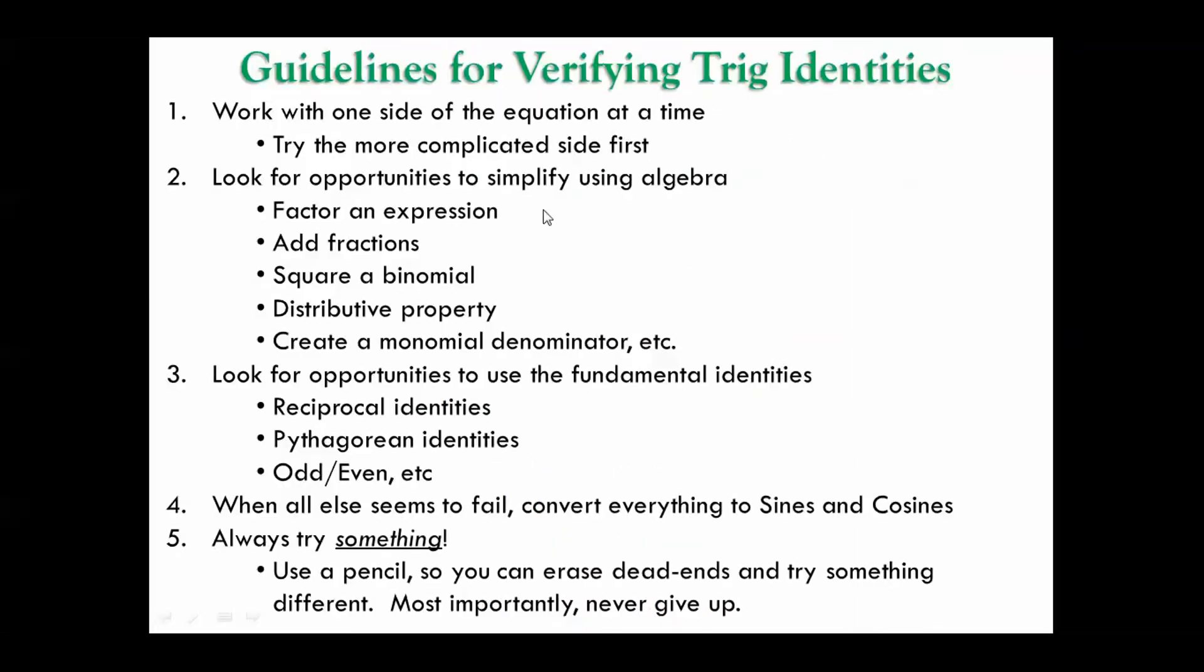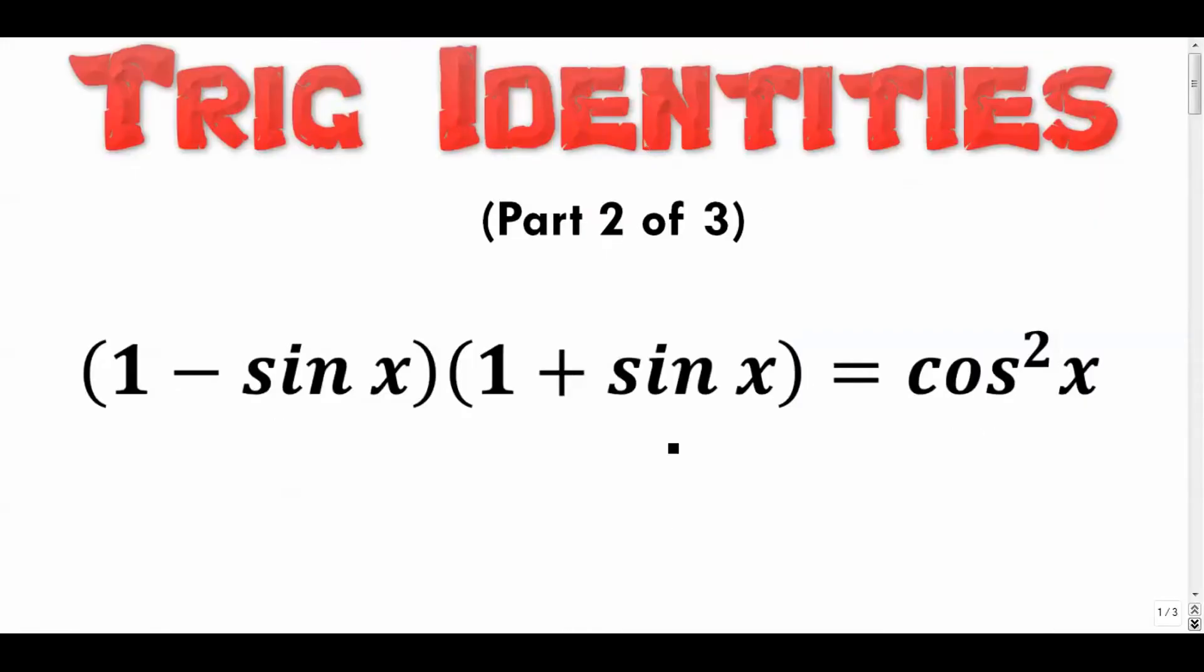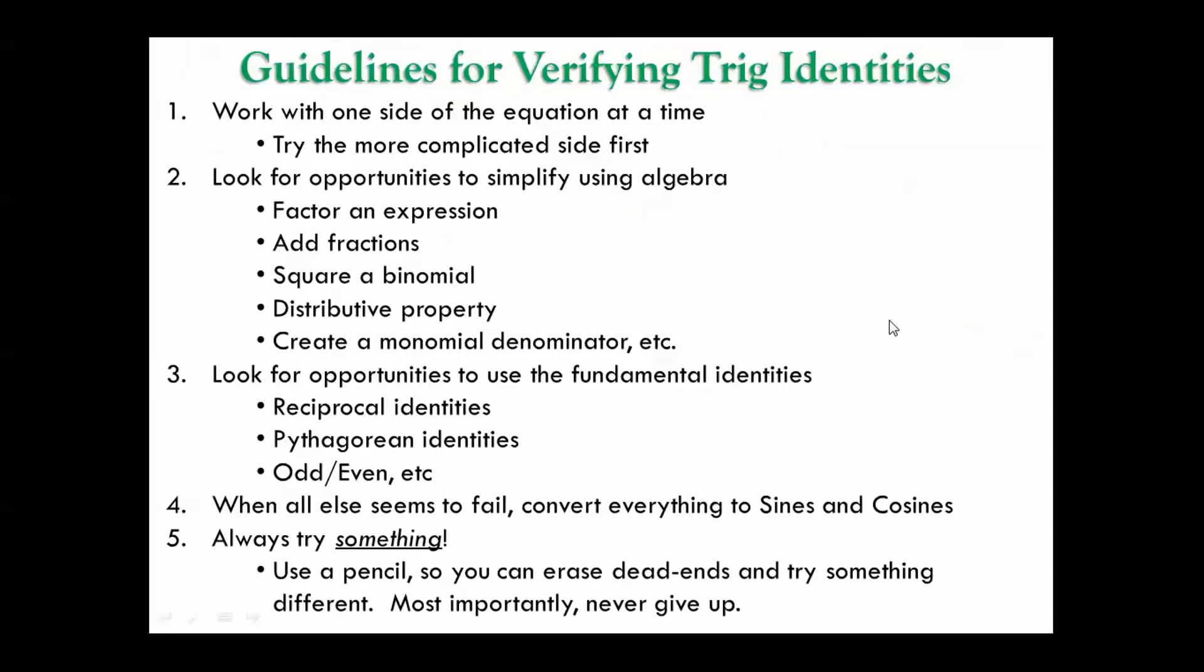The guidelines for that are: number one, start with the more complicated side first and try to get that whole side to equal the other side. In other words, this side visually looks more complicated so I'm going to try to get that side to be cosine squared x somehow. Number two, look for opportunities to use algebra to simplify. We're going to factor a lot, add fractions, square binomials, take difference of squares. If it's a cube we're going to do distributive property, all sorts of crazy stuff, so you have to be really good at algebra.